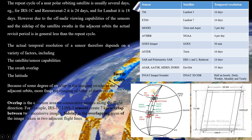The overlapping area increases from the equator to the pole. This is because longitudes are arranged such that the space between them is very high at the equator compared to the poles, since longitudes converge at both the north and south poles. As we move from equator to pole, the space between longitudes decreases, and as this distance decreases, the sidelapping area generally increases.